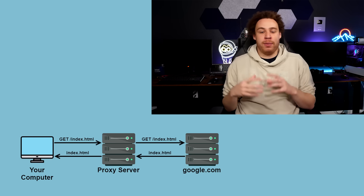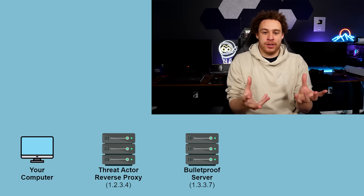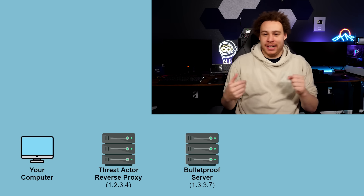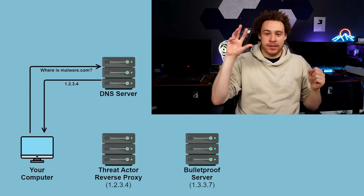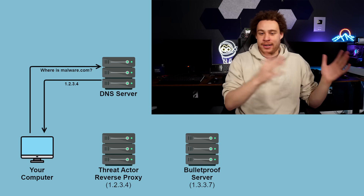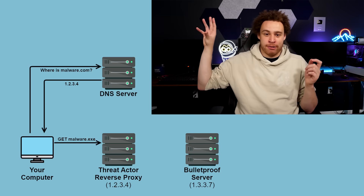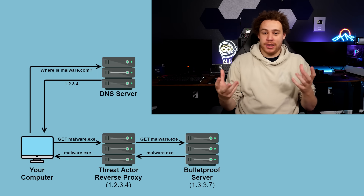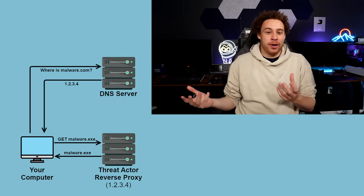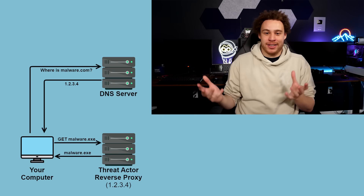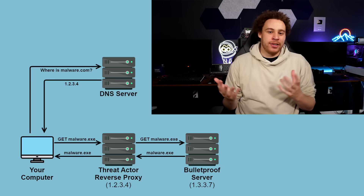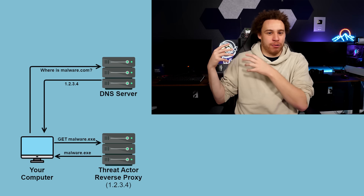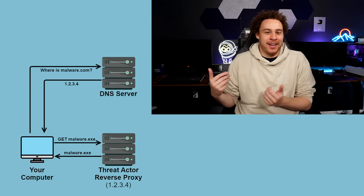This also works with websites. With a web proxy server, a threat actor would set up their domain to point to the IP address of the proxy server rather than their real server. Whenever a client connected to the proxy server, the proxy would quietly forward that request to the real server, which would respond back through the proxy. From the client's perspective, all they see is the proxy server — there's very little evidence it's forwarding requests. This protects the real server from being taken down and prevents it from appearing in any IP block list.